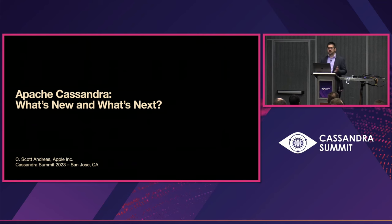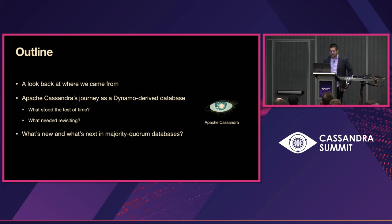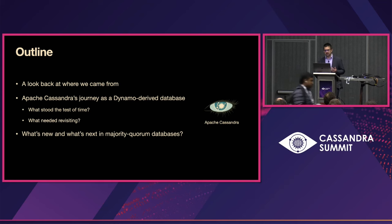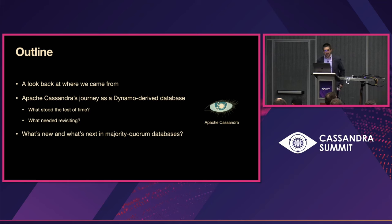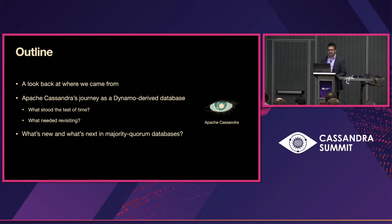It's great to see all of you. I'm glad that we can have an in-person event again, and I hope we can connect well at the conference. We'll start by framing the context of Cassandra's emergence in the original Dynamo paper, then follow how Dynamo-derived systems like Apache Cassandra evolved. We'll survey what stuck and some concepts that didn't pan out quite as well, and finally I'll offer some thoughts on what's new and next in majority quorum databases.